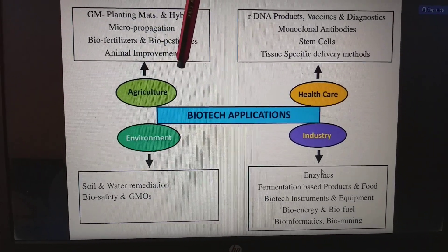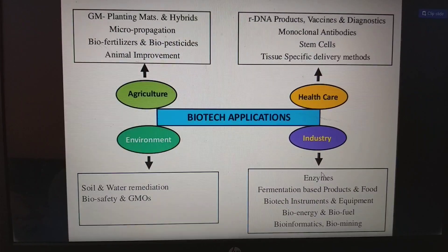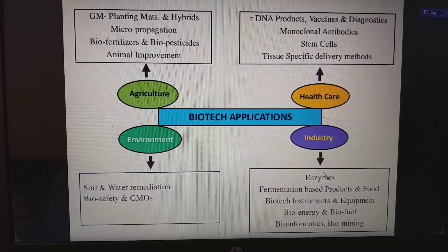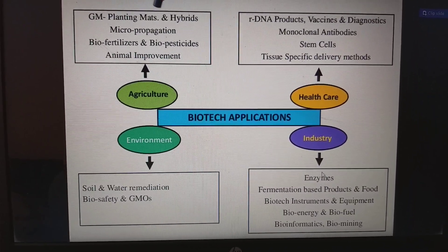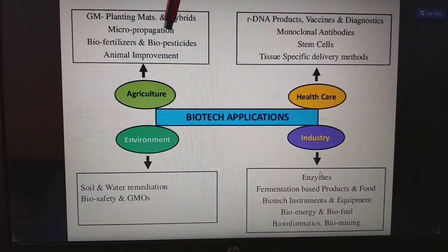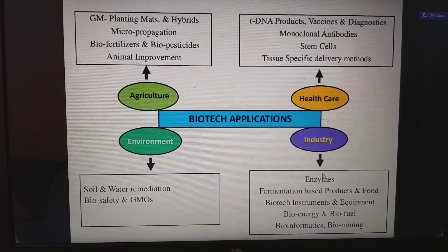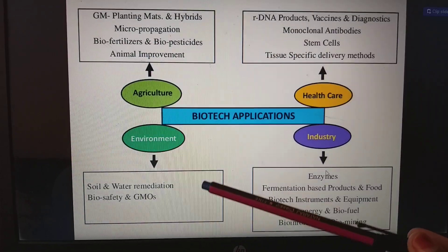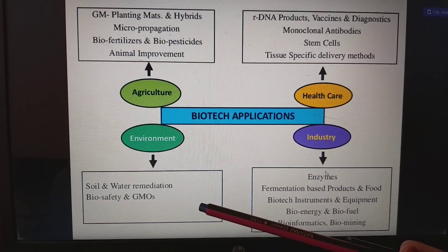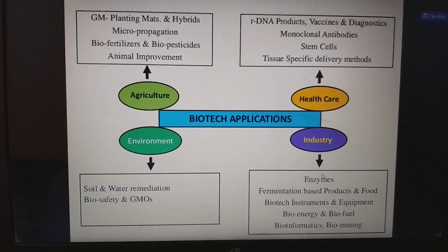In agriculture, biotechnology covers genetically modified plants and hybrids, micropropagation, biofertilizers, biopesticides, and animal improvement. For the environment, it is applied in soil and water remediation, biosafety, and GMOs.